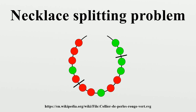Variant 1: Discrete splitting. The necklace has beads coming in different colors. There are beads of each color, where a positive integer. Partition a necklace into parts, each of which has exactly the right number of beads of each color, using at most cuts. Note that if the beads of each color are contiguous on the necklace, then at least that many cuts must be done inside each color, so the bound is optimal.